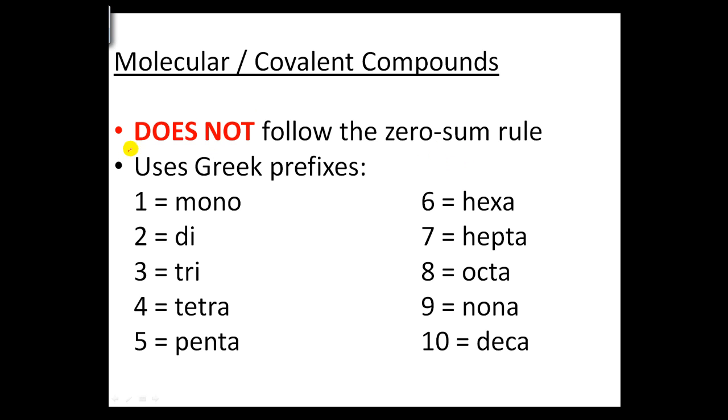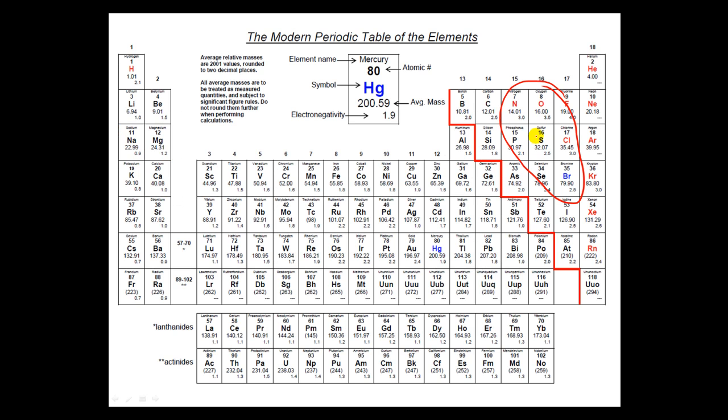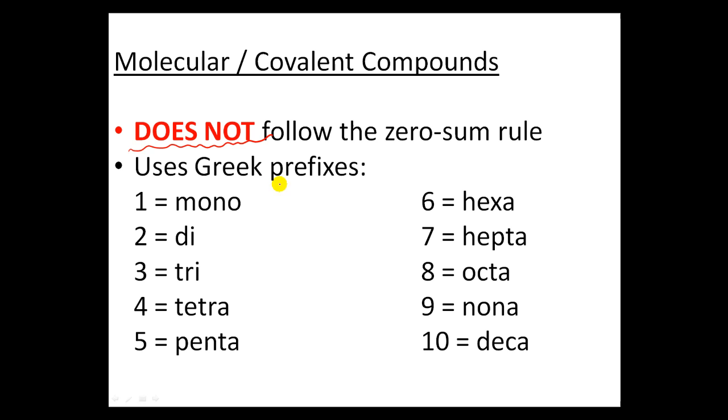Another interesting feature about this naming system is that it does not follow the zero sum rule. You can't, because if they're both non-metals, all their valence charge is going to be negative anyway, so there's no way you can add up to zero. Instead, we use the Greek prefixes to tell us how many elements are involved in the compound. Make sure you memorize these ones.